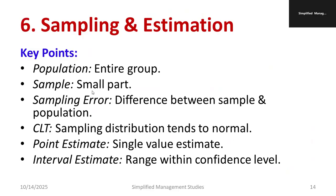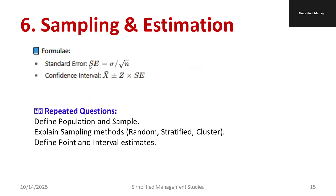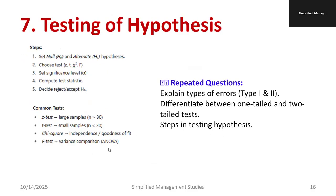Regarding sampling and estimation: population is the entire group; a sample is a small part of the population. Sampling error is the difference between the sample and the population. The Central Limit Theorem (CLT) states that the sampling distribution tends to normal. Point estimate is a single value estimate; interval estimate is a range within the confidence level. Key formulas: standard error = σ / √n; confidence interval = x̄ ± z × SE. Probable questions: define population and sample, explain sampling methods — random, stratified, and cluster sample — and define point and interval estimates.